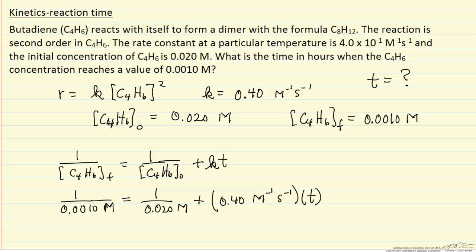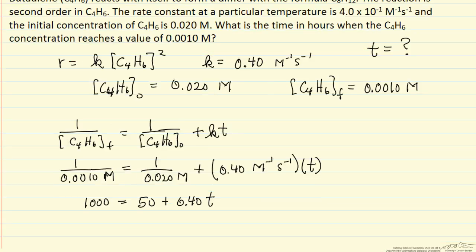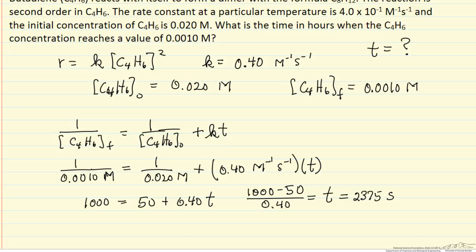We're going to check the units, and units are going to cancel the molar in all the terms. We're going to end up with time in seconds. So I just multiplied this through and you can see now 1,000 minus 50 over 0.40 is going to be the time, 2,375 seconds.